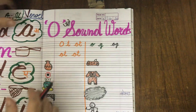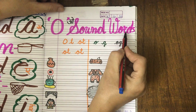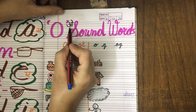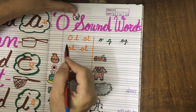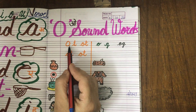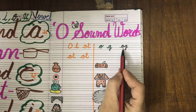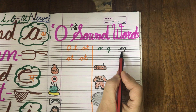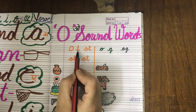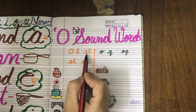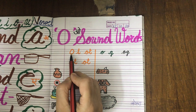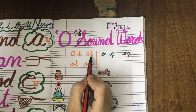Today we will learn O sound words. O ki sound kya hai bita? O. Thik hai? Similar sound hai. To aaj hum karengi oat family words and oag family words. O, ta, oat.